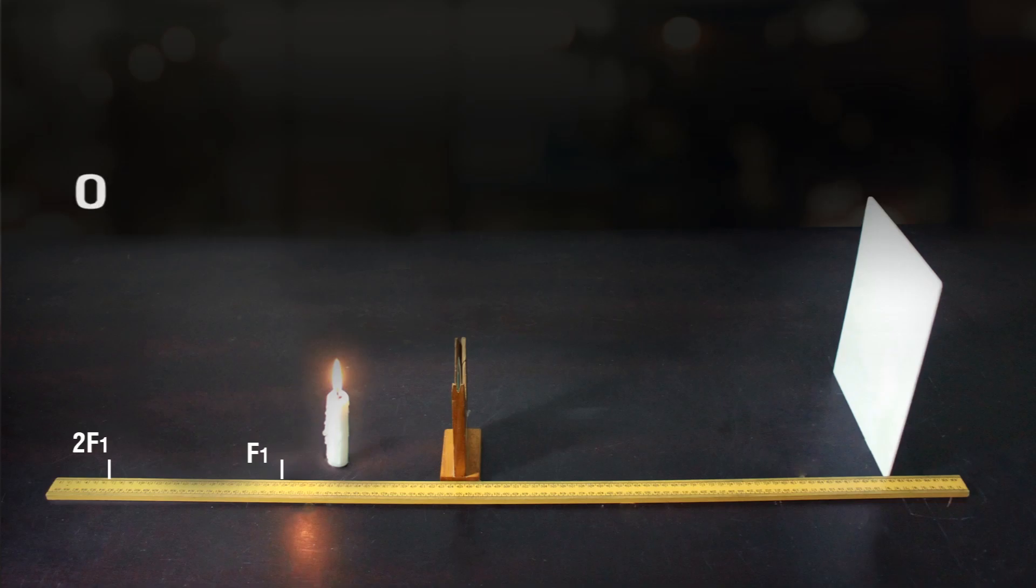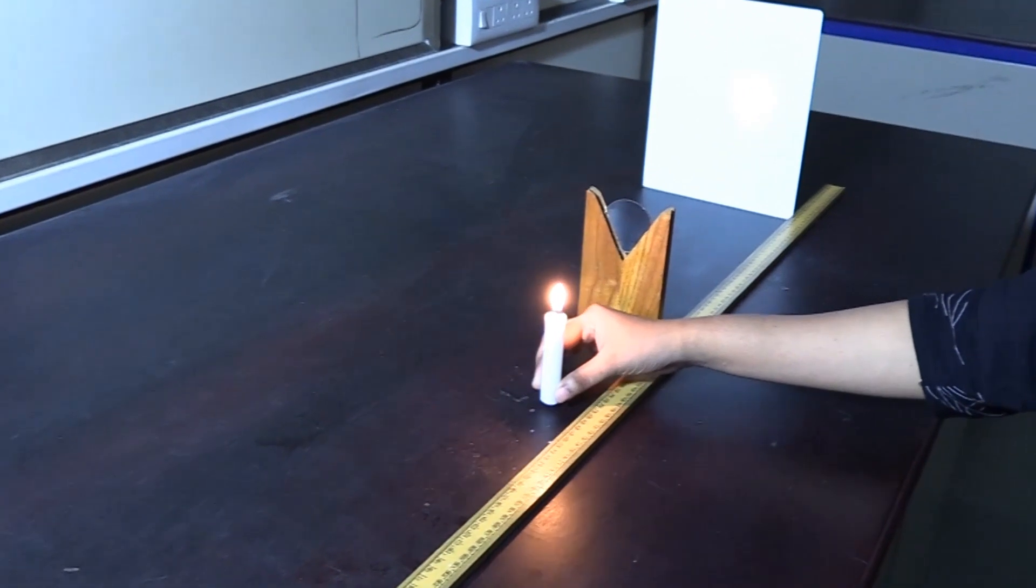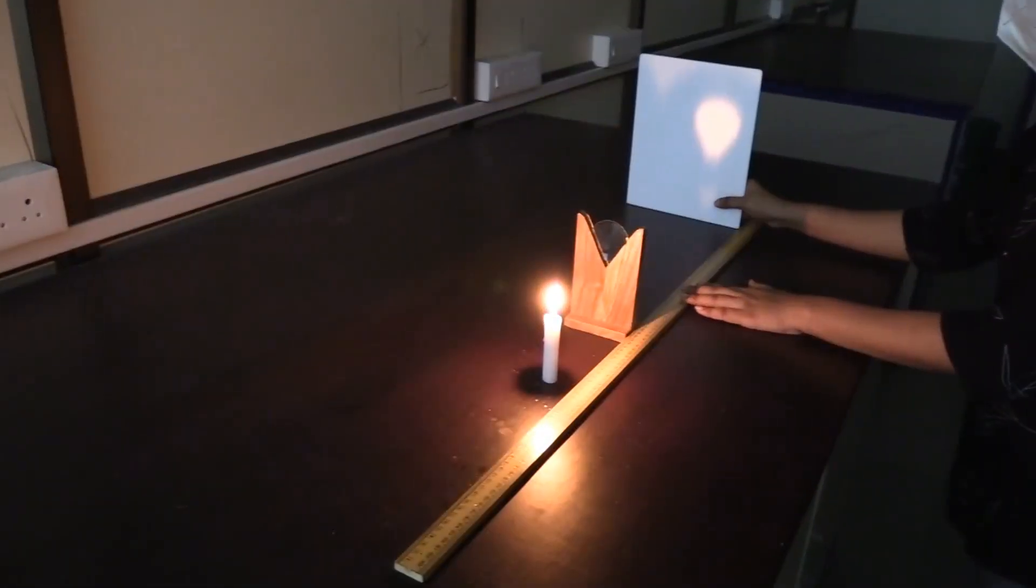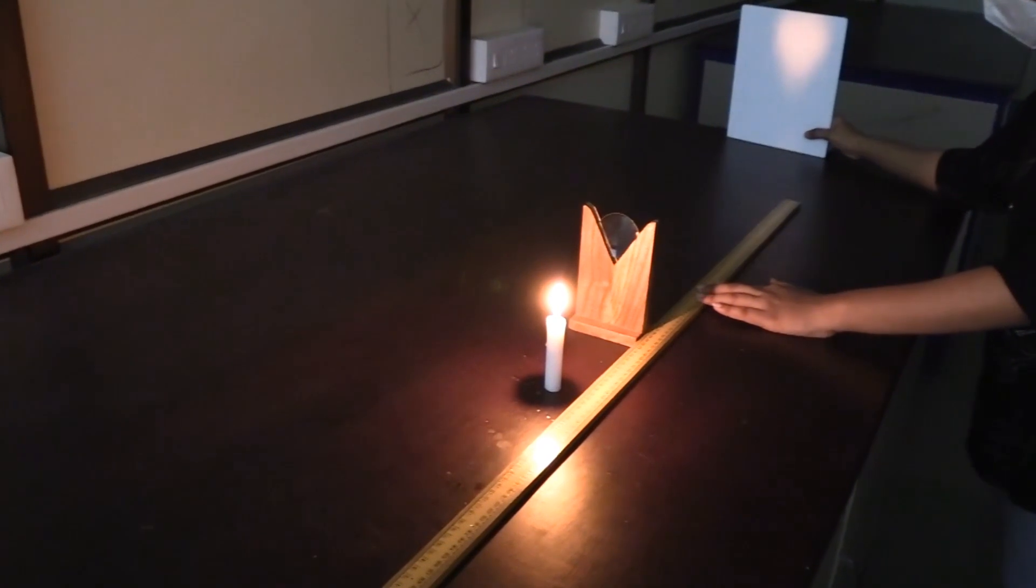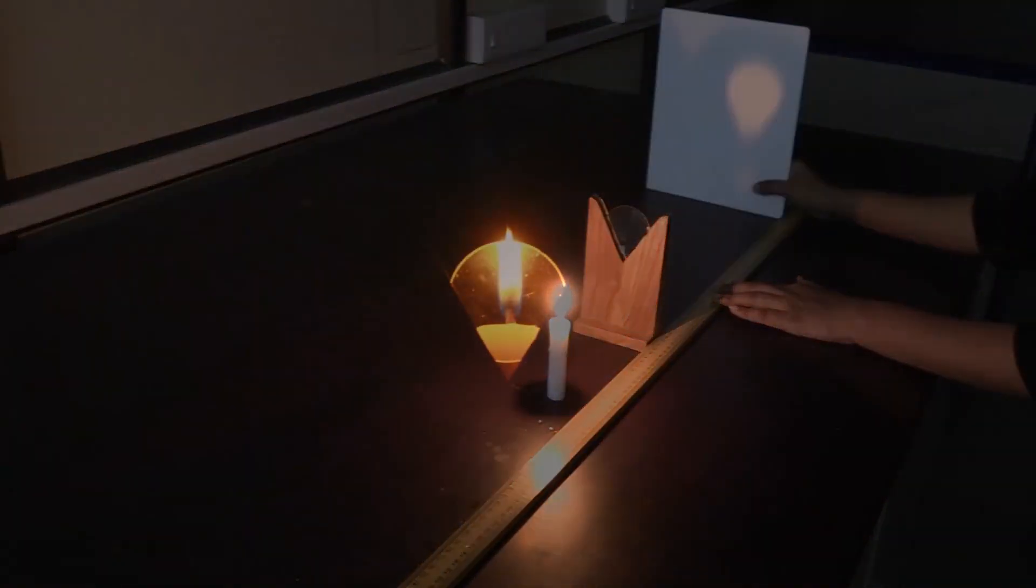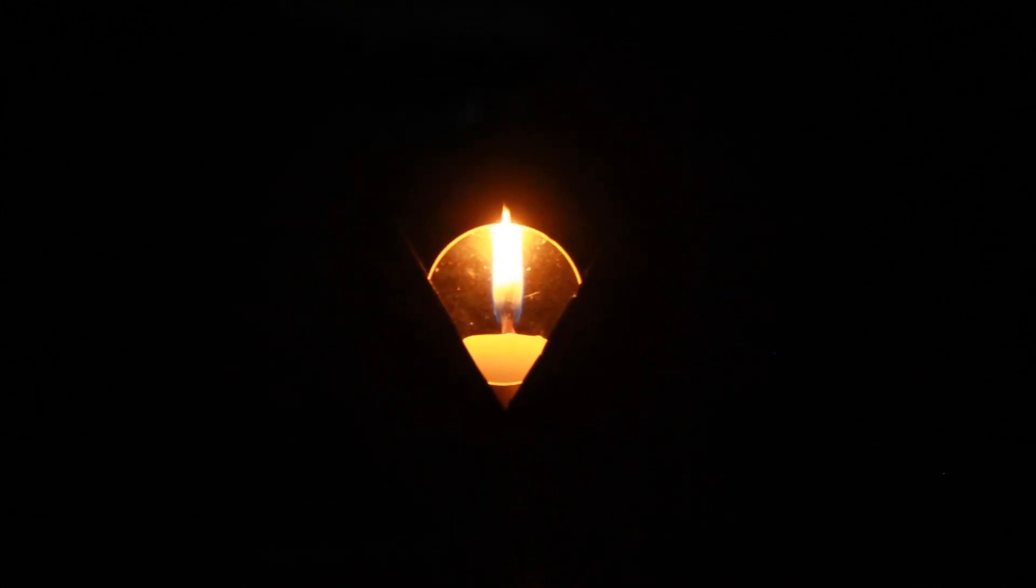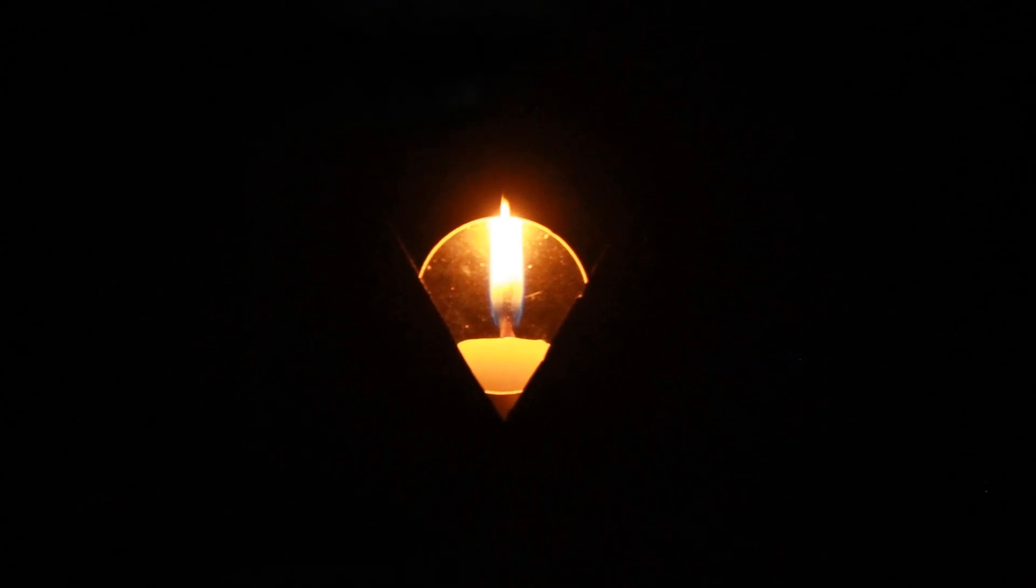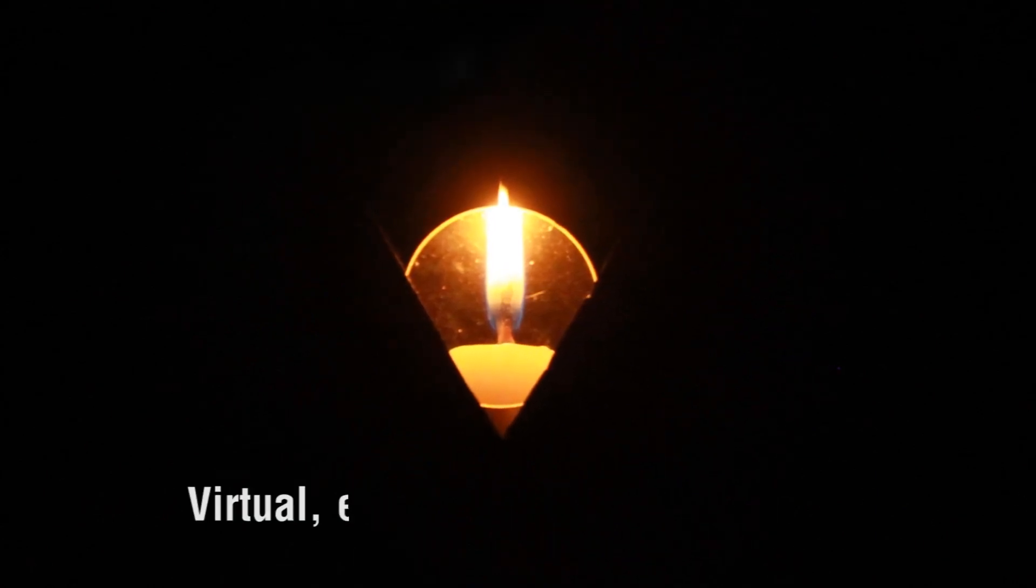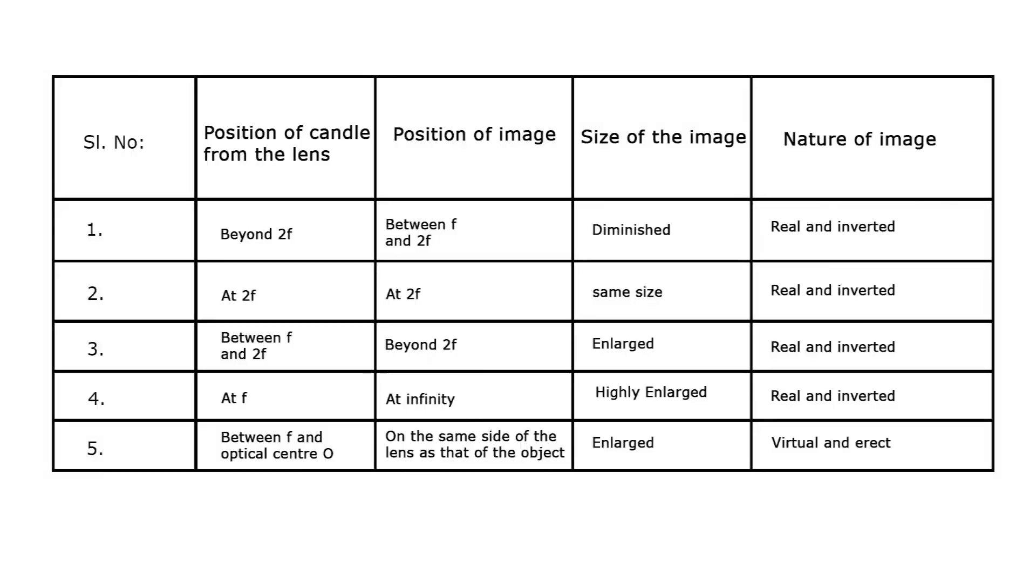Case 5: Object between F1 and O. Place the candle at a distance between F1 and O. Move the screen back and forth. Notice that no image will be obtained on the screen. Now, look at the candle flame through the convex lens and observe the nature of the image. Note that the image formed is virtual, erect, and magnified. Record the entire observations in the table.